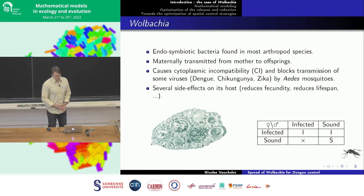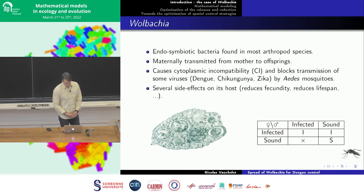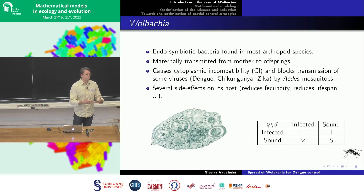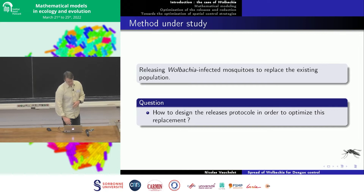There are some side effects: the fecundity is reduced, and the lifespan is also reduced for mosquitoes carrying Wolbachia. So, Wolbachia is transmitted vertically from mother to offspring, and mosquitoes infected by Wolbachia cannot transmit disease. The idea is to replace the local population by a population carrying Wolbachia through mating, hoping that after several generations the entire population will carry Wolbachia. The idea is to release Wolbachia-infected mosquitoes to replace the existing population with one that cannot transmit disease.